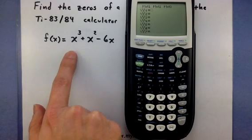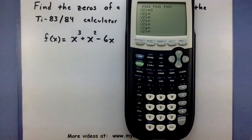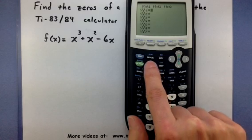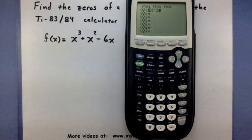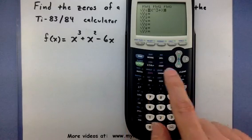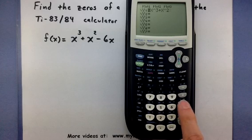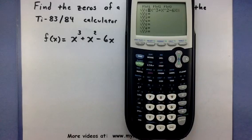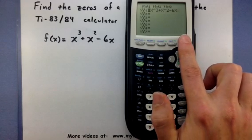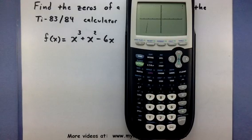And now we're going to enter in x cubed plus x squared minus 6x. So x caret 3 plus x caret 2 minus 6x. There we go. So there's our function. And now if you press the graph, we can take a look at its shape.